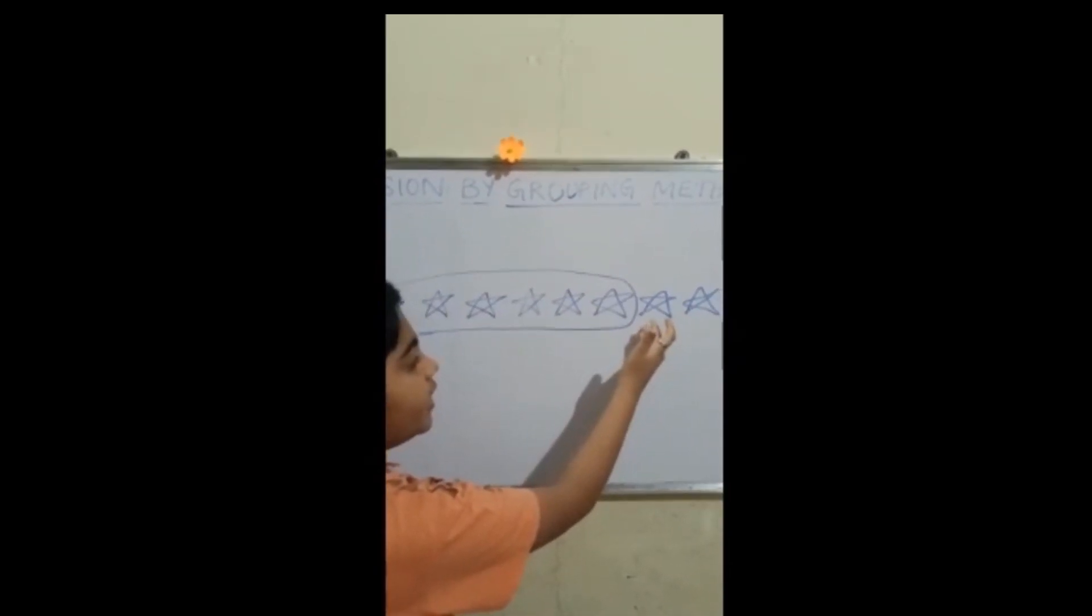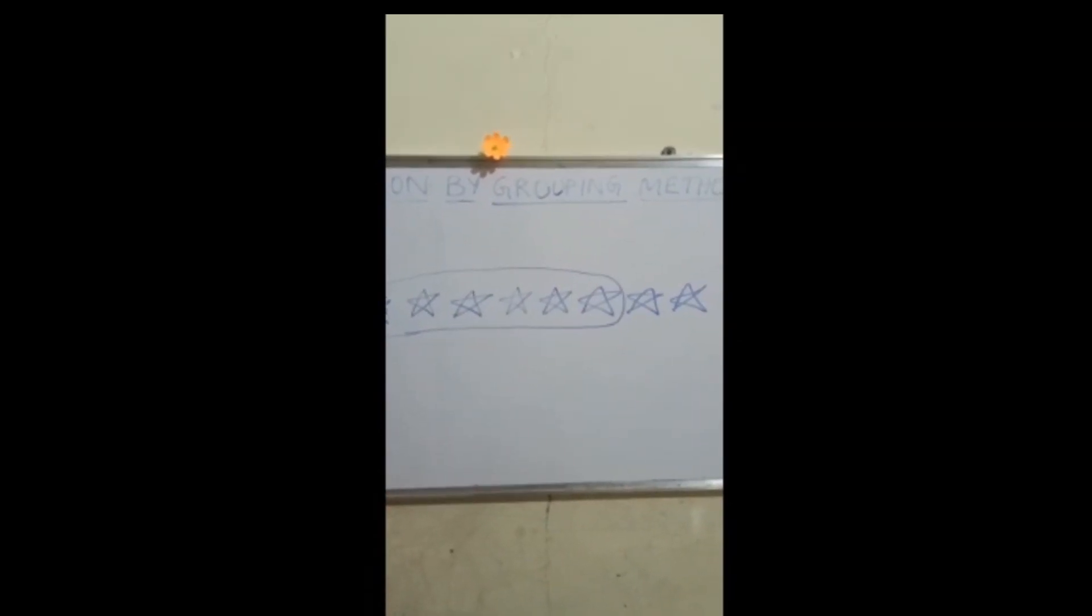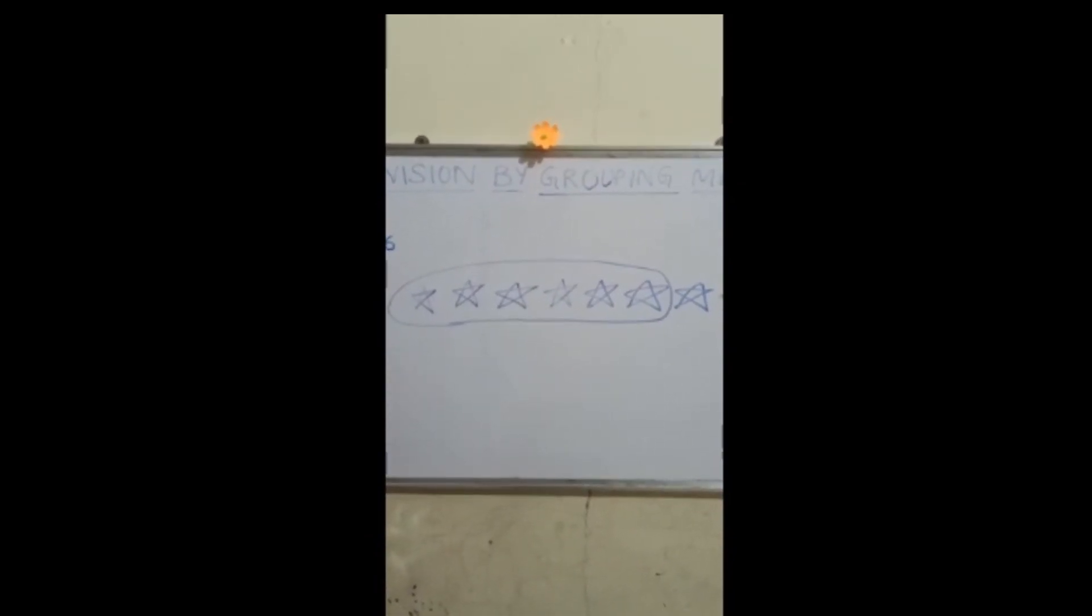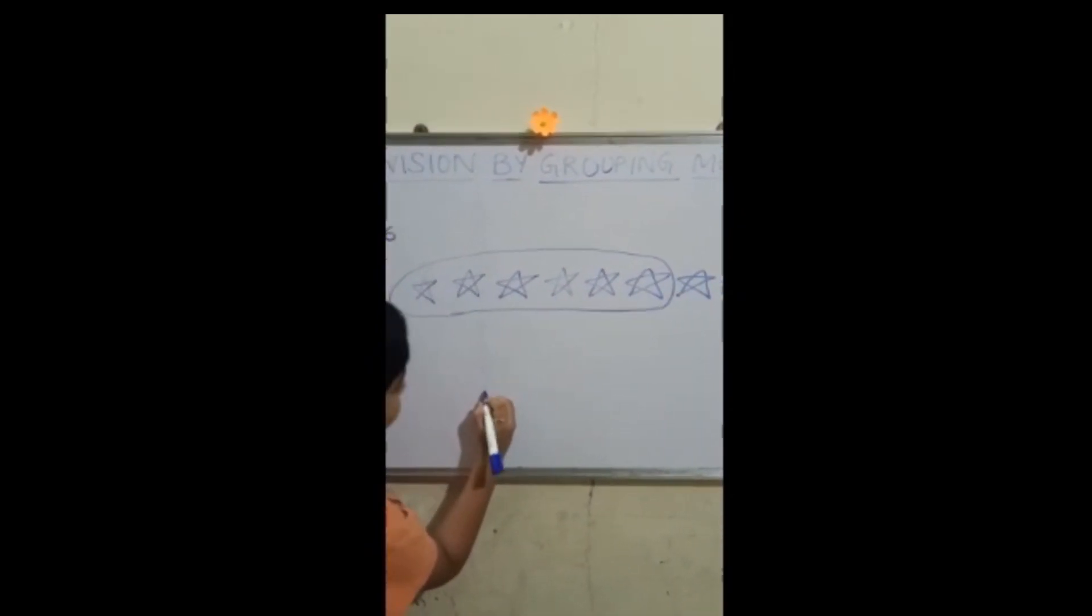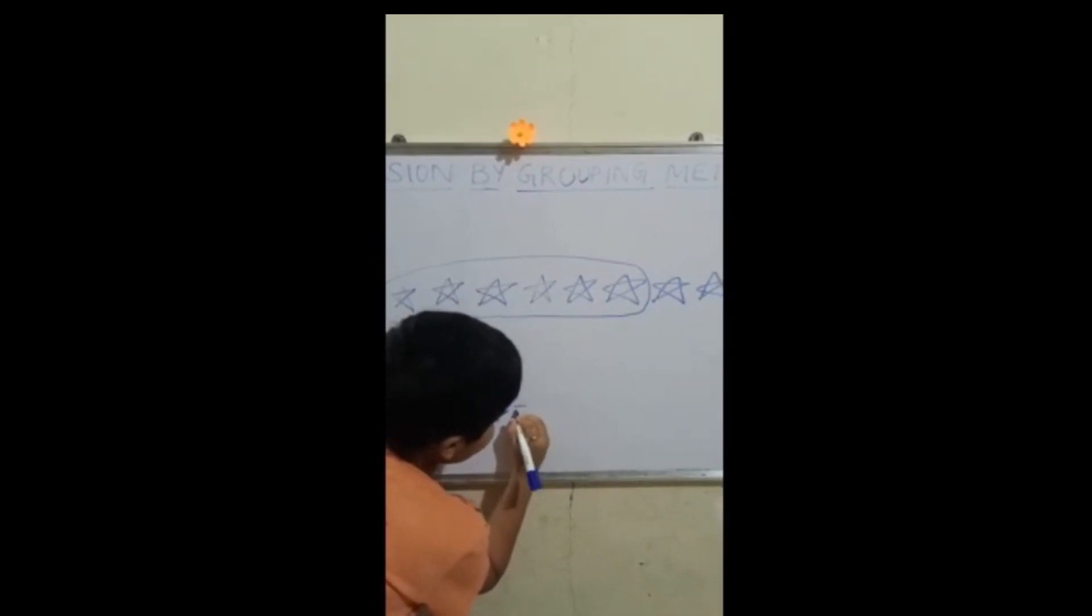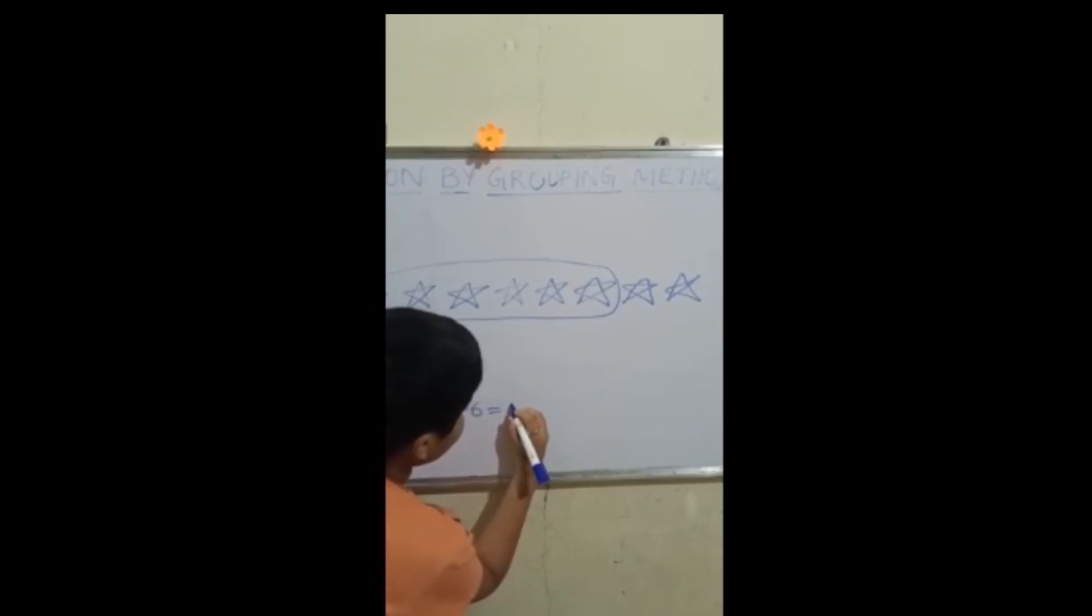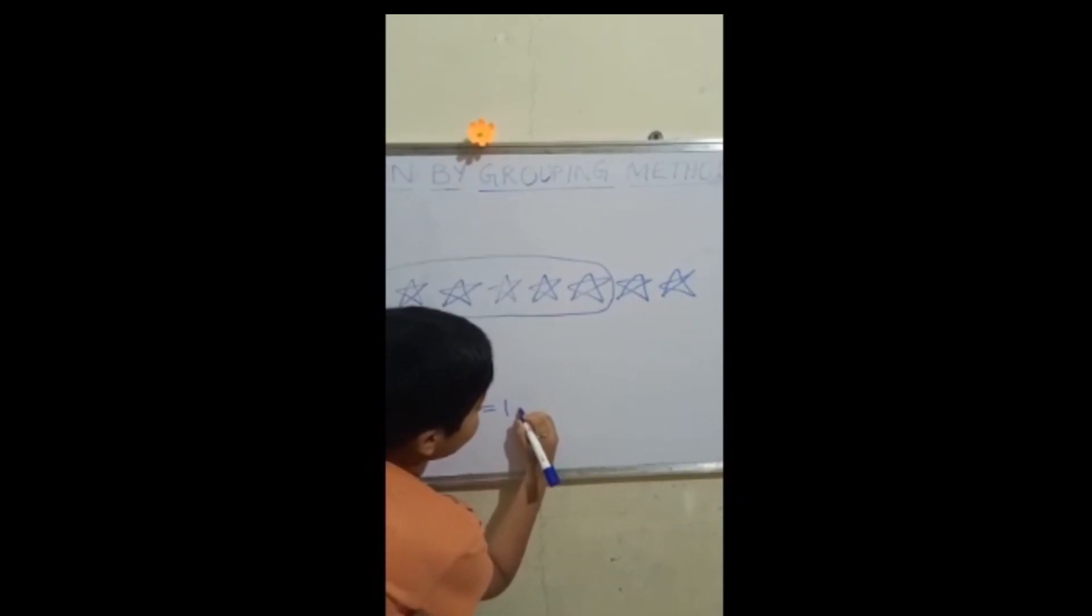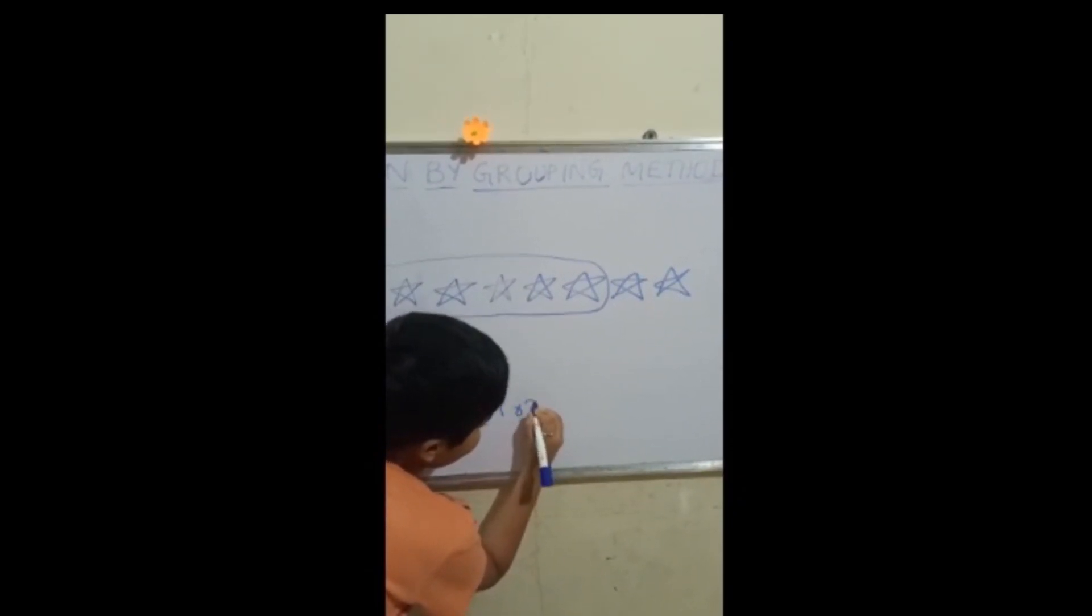Here two are left which is the remainder. Now let us count the groups. One. There is only one group. So, eight divided by six is equal to one and the remainder is two.